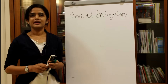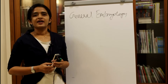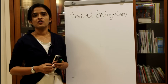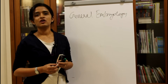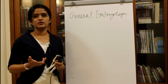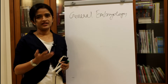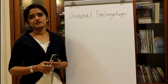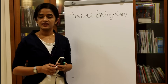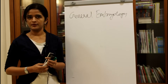Today's topic is general embryology. We know that oocyte and sperm are formed as a result of oogenesis and spermatogenesis, two different processes happening in the male and a female. After the process of oogenesis we have the oocyte, and after the process of spermatogenesis we have the sperm.